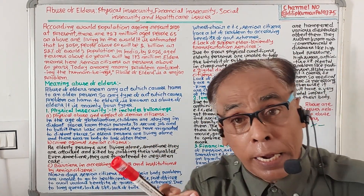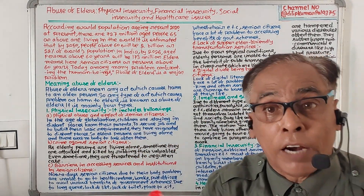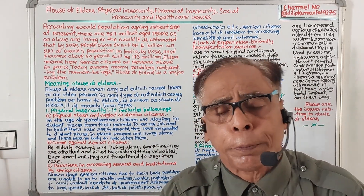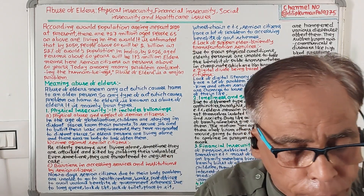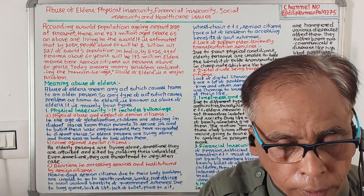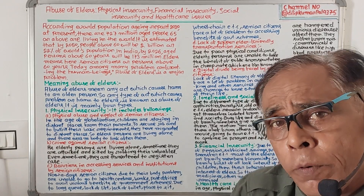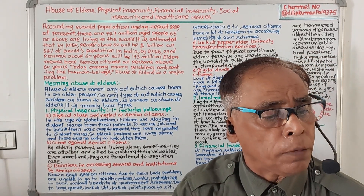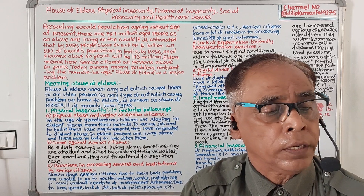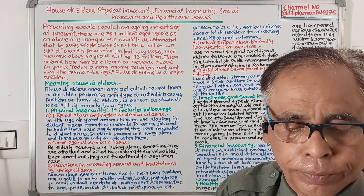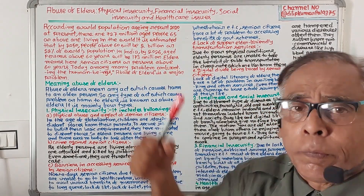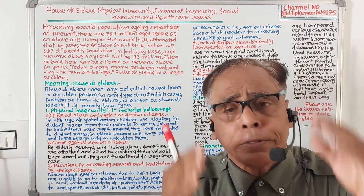Abuse of Elders is found in the 5th Semester Ethics and Value paper. The name of the paper is Vulnerable Sections of Society: Understanding Their Issues. But before I discuss Abuse of Elders, I want to inform my viewers.